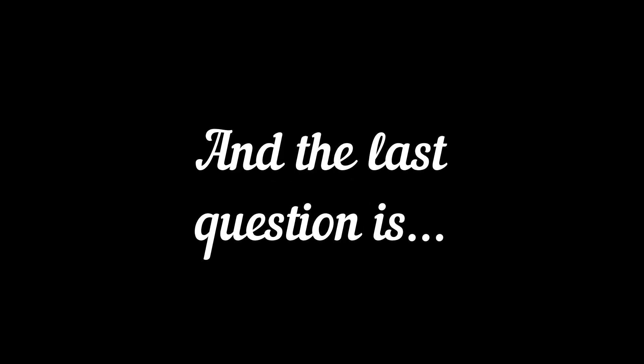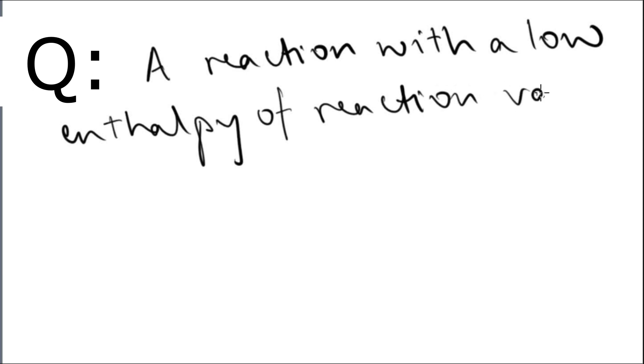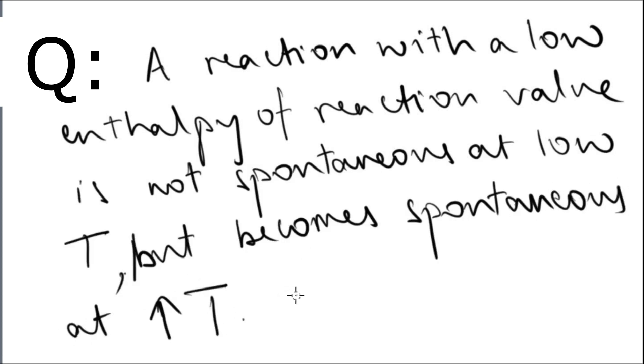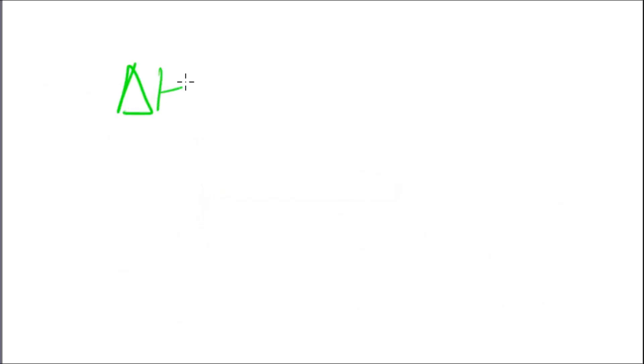And the last question: a reaction with a low enthalpy of reaction value is not spontaneous at low temperatures but it becomes spontaneous at higher temperatures. So keeping this in mind, tell me what are the signs of enthalpy and entropy, respectively. Enthalpy is going to be positive. Why? Because when delta S surroundings is positive, the total will be negative. And if you increase the temperature, the negative value becomes lesser and lesser, which means that the entropy becomes positive.